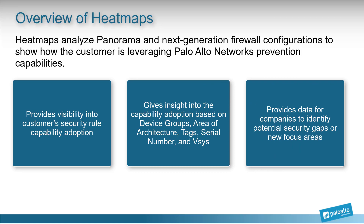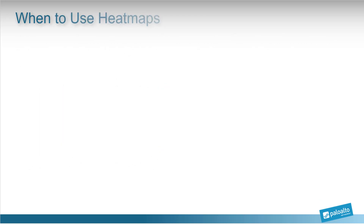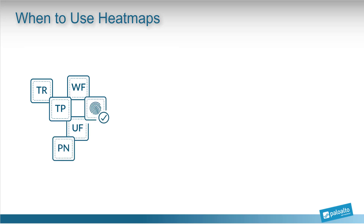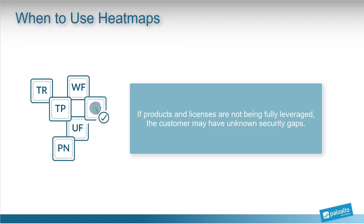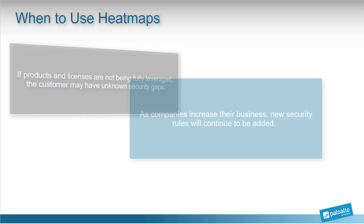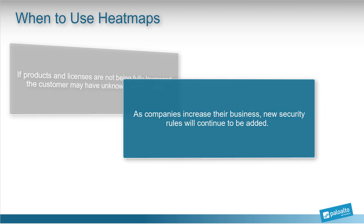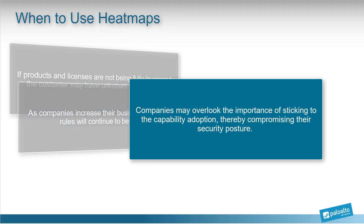Heatmaps can also provide data that can help companies identify potential security gaps or areas of focus that have been overlooked. Customers invest in our products and purchase licenses to secure their devices. If our products and licenses are not being fully leveraged, the customer can risk unknown security gaps in their policies. As companies expand or increase in their business, new security rules will continue to be added, and companies may overlook the importance of sticking to the capability adoption, thereby compromising their security posture.